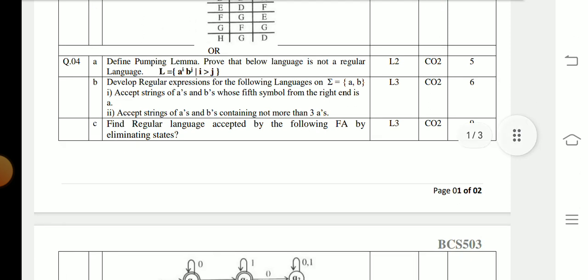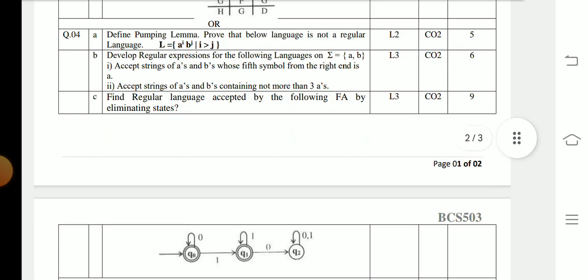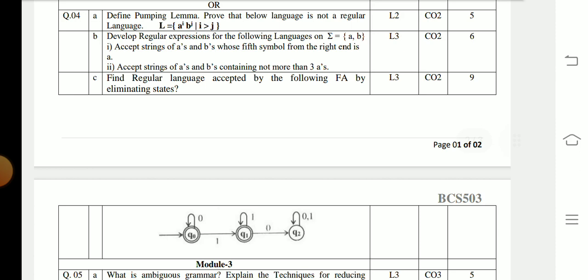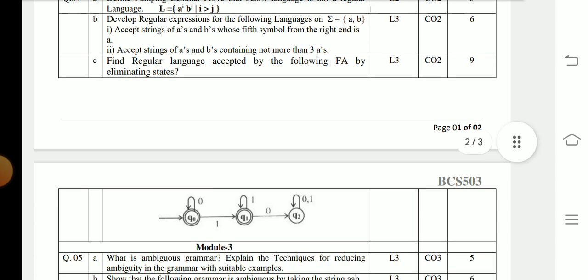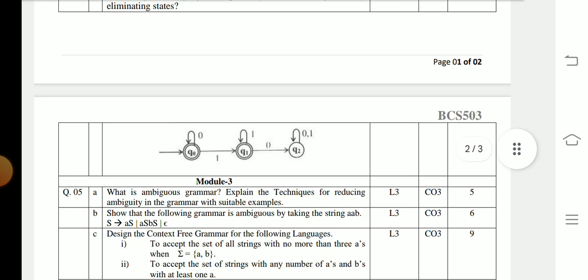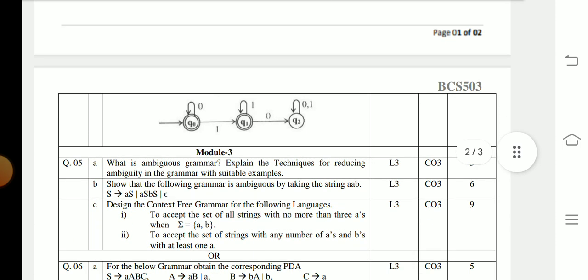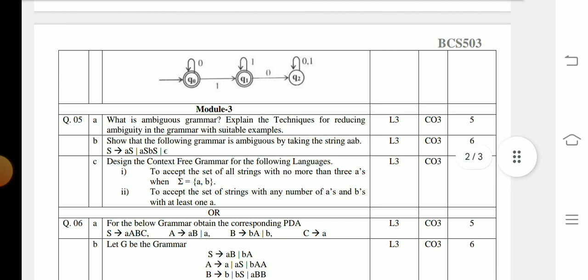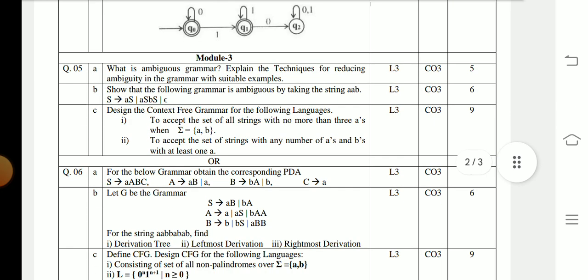Question 4c: Find the regular language accepted by the following FA by eliminating the states — a diagram is given. Question 5a: What is ambiguous grammar? Explain the techniques for reducing ambiguity in the grammar with a suitable example.